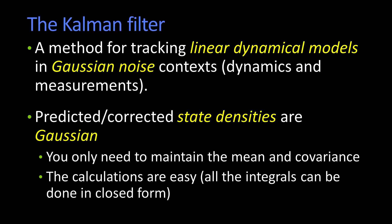So last time we developed what was called the Kalman filter. The Kalman filter was for linear dynamical systems where you had a Gaussian noise context. What we meant by that was the motion could be predicted by a linear factor applied to the motion that you've estimated, and then you add in some Gaussian noise if you were thinking about what the uncertainties are.